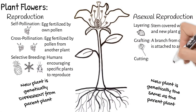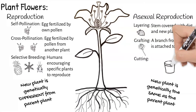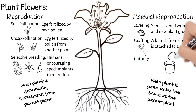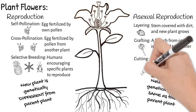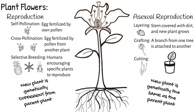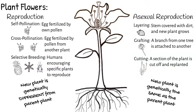Cuttings is when a small section of a plant is cut off and replanted to grow a new plant. Lavender is a plant that does well growing from cuttings. And with that, we have learned about all the parts of this plant. Check out the links below if you missed any of the videos on the roots, stem, or leaves.